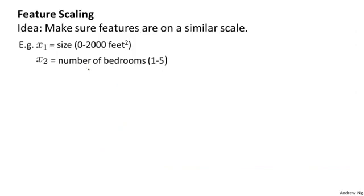Here's the idea. If you have a problem where you have multiple features, if you make sure that the features are on a similar scale, by which I mean make sure that the different features take on similar ranges of values, then gradient descent can converge more quickly.